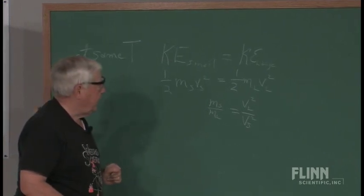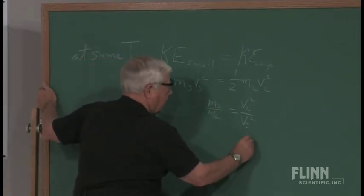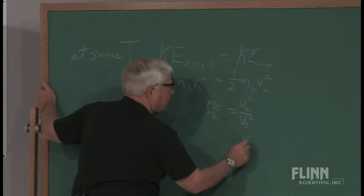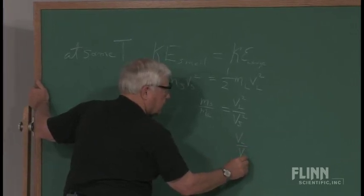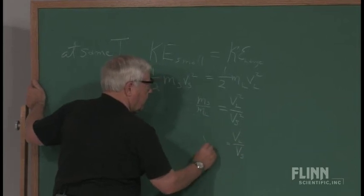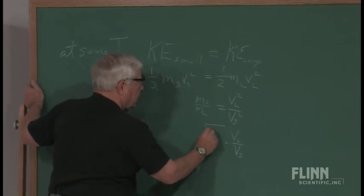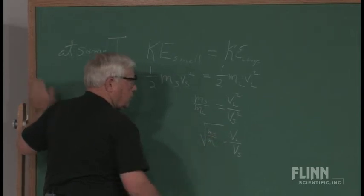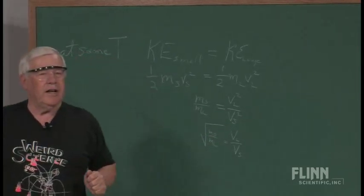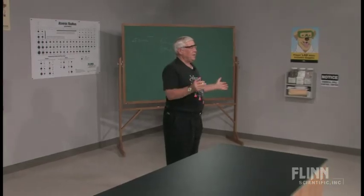And if we then take the velocity of the large ones divided by the velocity of the small ones, it is going to be equal to the square root of the mass of the small over the mass of the large. And you then get a formula to relate the speeds.